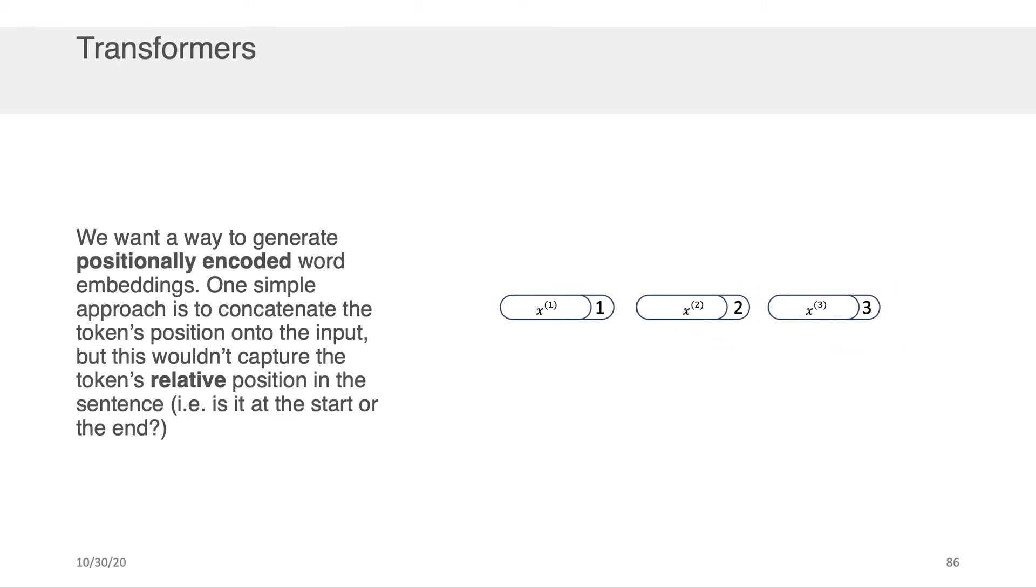And one thing we could do is we could obviously update the model, but another thing we could do is try to find a way of representing the input data so that it captures things about the position. Okay, that is we'd like to do a positionally encoded word embedding.